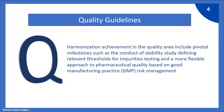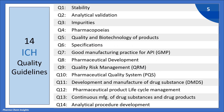Harmonization achievements in the quality area include pivotal milestones such as the conduct of stability studies, defining relevant thresholds for impurity testing, and a more flexible approach to pharmaceutical quality based on good manufacturing practices. Now let us see the 14 ICH Quality Guidelines.